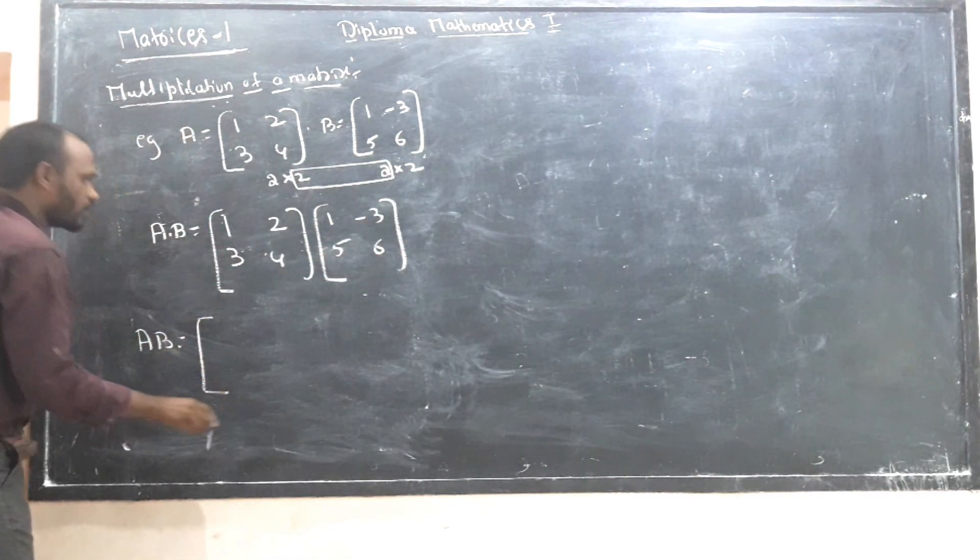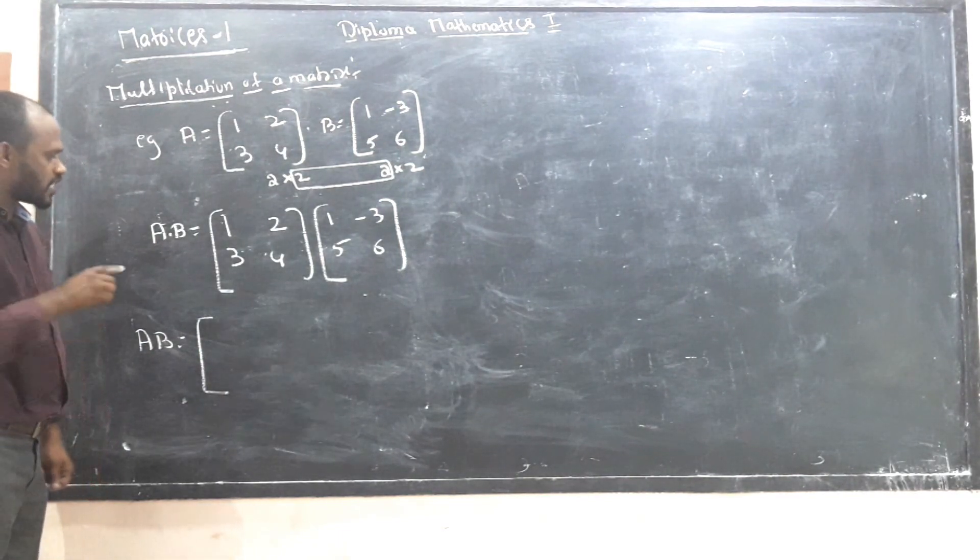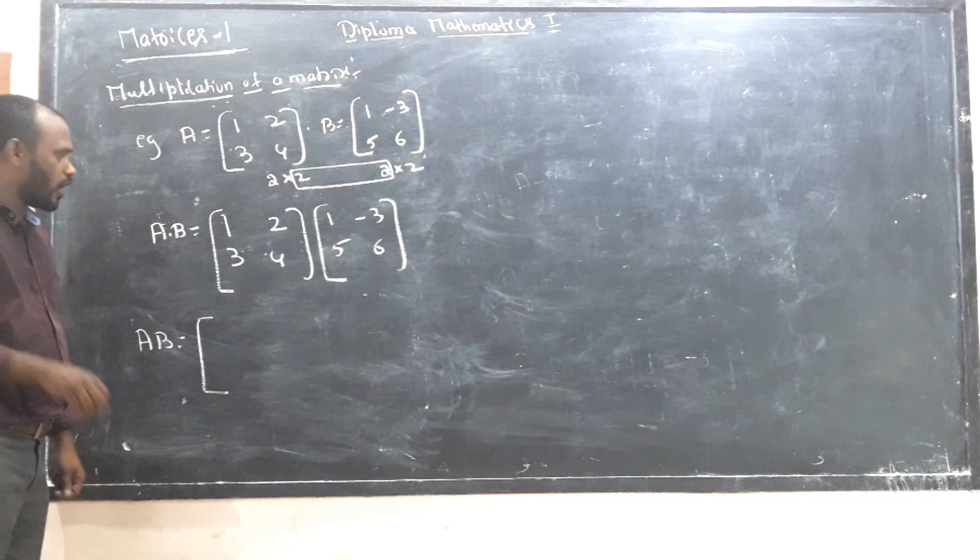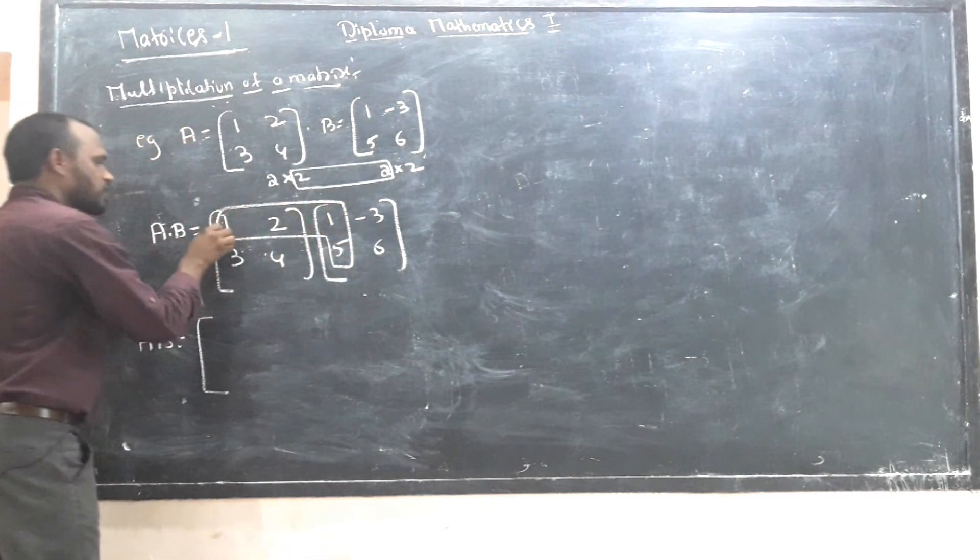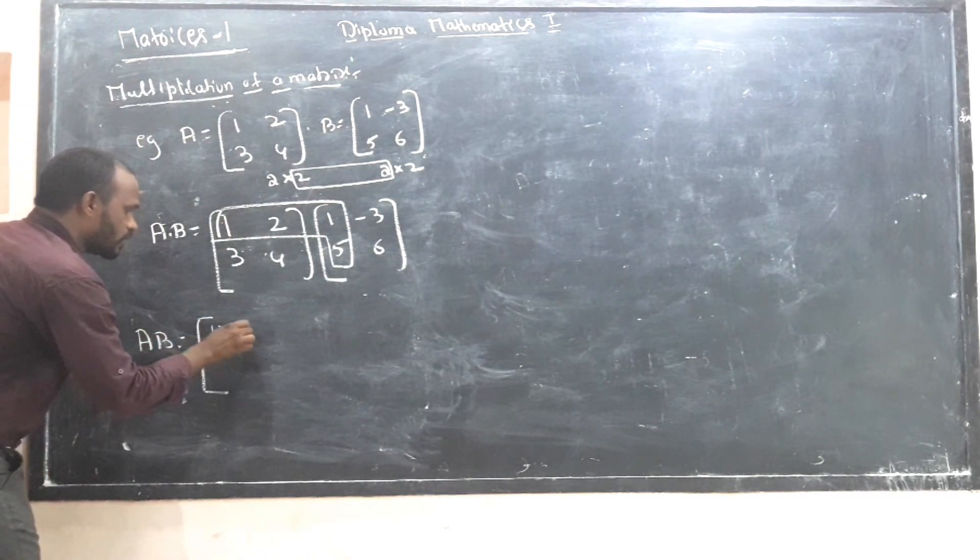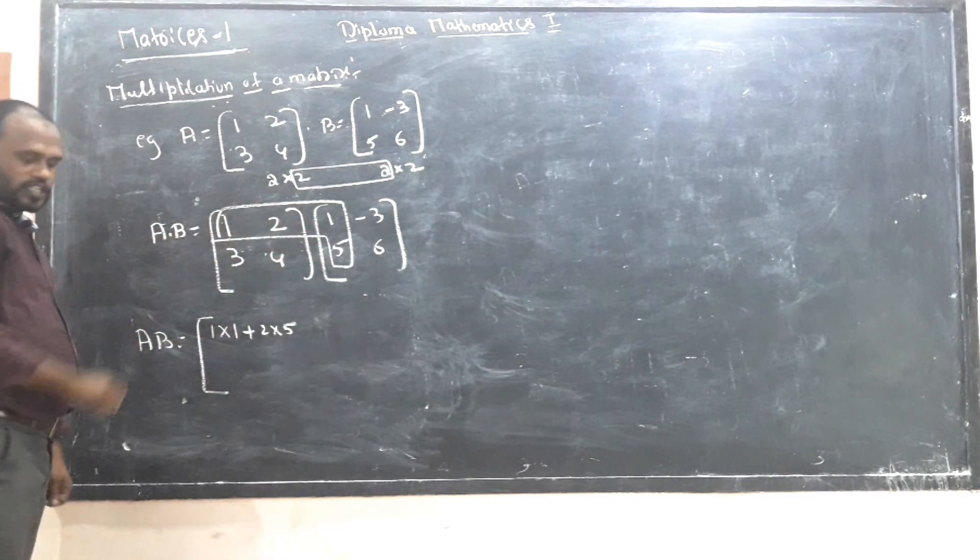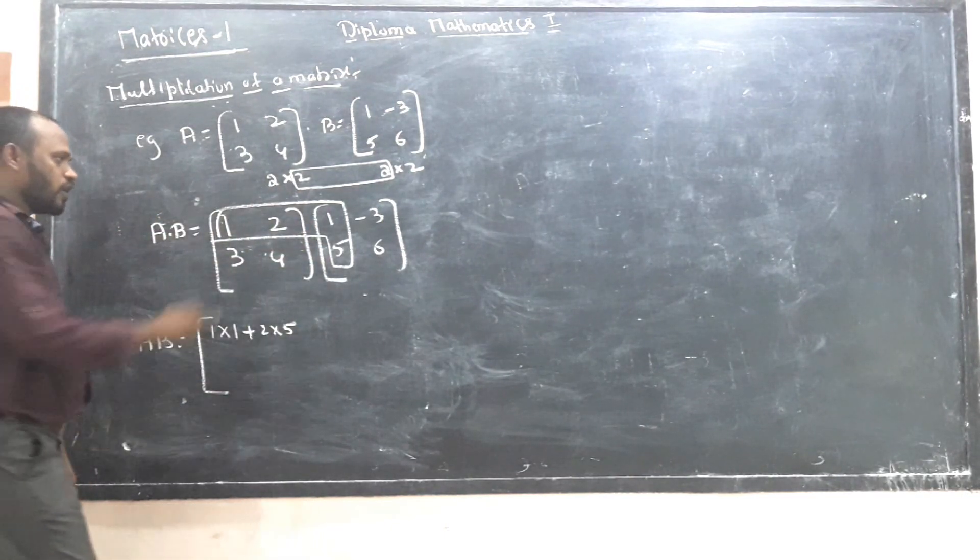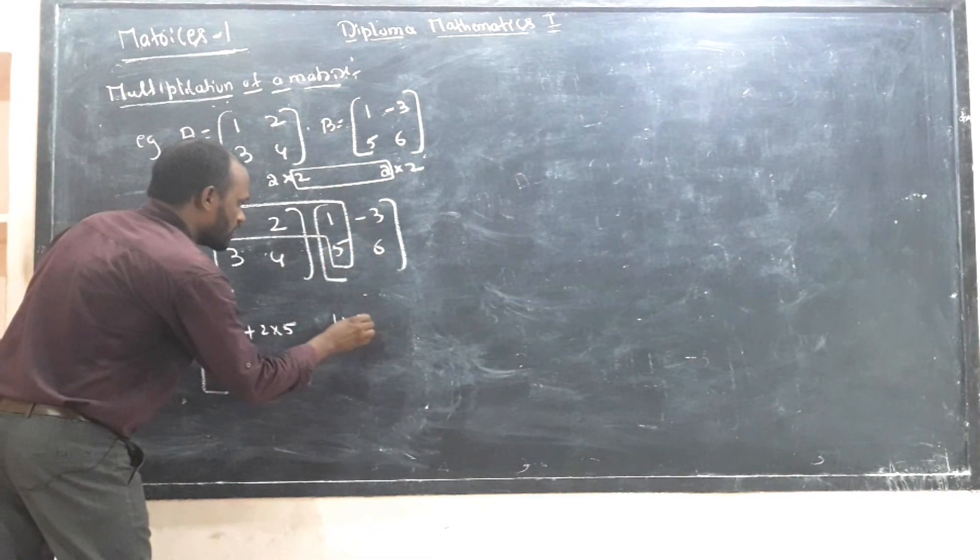First row multiplied. First number: first row, first column is 1 into 1 plus 2 into 5. First row, second column is 1 into minus 3 plus 2 into 6.